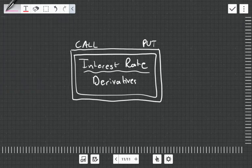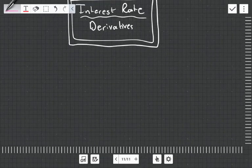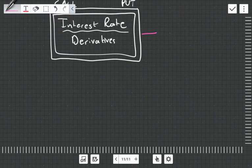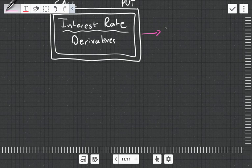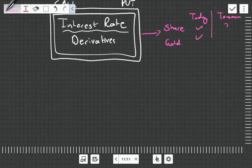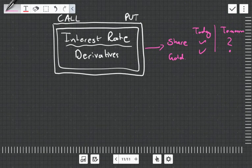Let's back it up quickly and give a quick background on how a derivative works. Let's say I have a share or some gold. There's the price today and the price tomorrow. We know what the price is today but we don't know what it will be tomorrow. We can use a derivative to lock in the price tomorrow.